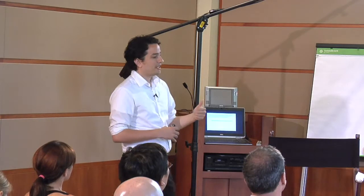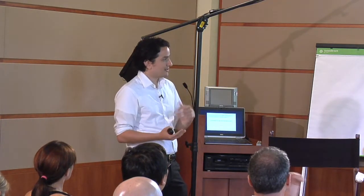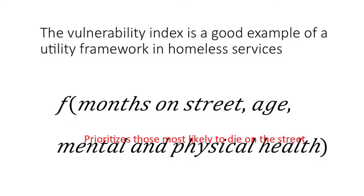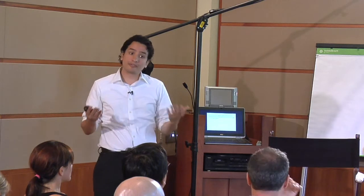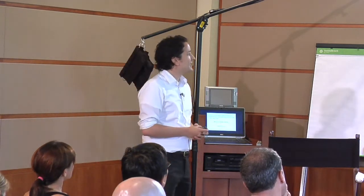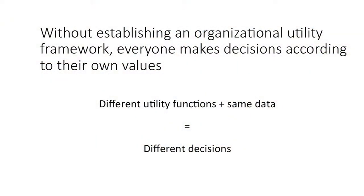It's not just focusing on placing people into housing or working with clients who are easiest to serve — that's the same issue as the workforce development problem. Instead you're prioritizing the people who are the most chronically homeless, and your utility framework actually reflects that. Without an organizational utility framework, everyone makes decisions according to their own values. If you have different utility functions and the same data, you can have different decisions. This is the reason we have Republicans and Democrats — same data, two different utility frameworks, leading to different decisions.